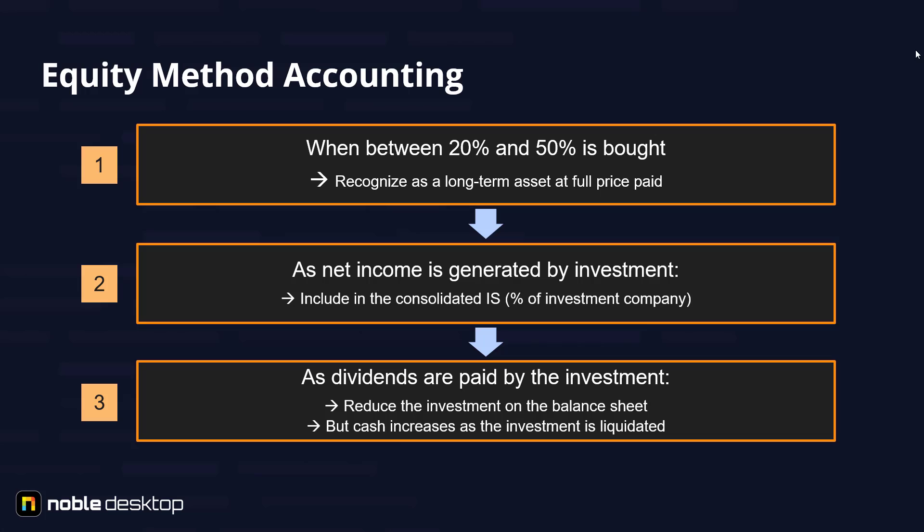When between 20% and 50% of the stake is purchased, we should recognize it as a long-term asset at the full price paid. As net income is generated by the investment, it would be included in the consolidated income statement as a percentage of the investment company. As dividends are paid by the investment, we should reduce the investment on the balance sheet, and cash increases as the investment is liquidated.